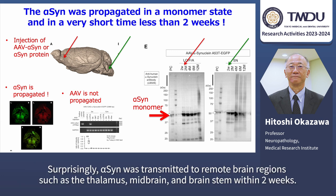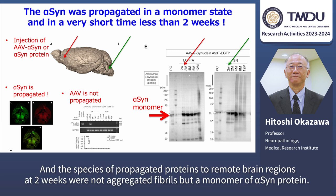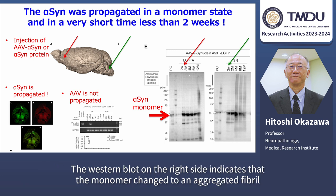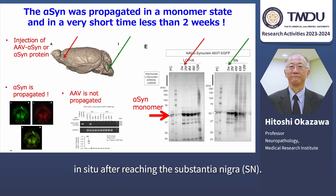Surprisingly, alpha-synuclein was transmitted to remote brain lesions such as thalamus, midbrain, and brainstem within two weeks. The species of propagated proteins to remote brain lesions at two weeks were not aggregate fibrils, but monomers of alpha-synuclein protein. The western blot on the right side indicates that the monomers changed to an aggregated fibril in situ after reaching the substantia nigra.